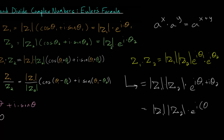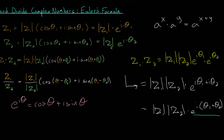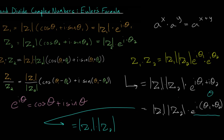Factoring out the i, we can rewrite this as the product of the magnitudes multiplied by e to the i times (theta one plus theta two). If we rewrite this exponential expression using Euler's formula, we can go back to polar form: the product of the magnitudes multiplied by the cosine of theta one plus theta two, plus i times the sine of theta one plus theta two. This is equivalent to the formula we already derived for multiplying two complex numbers in polar form.